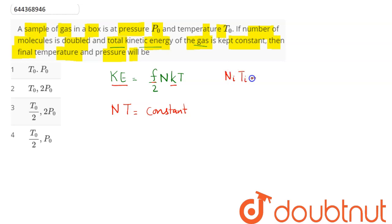N_initial × T_initial = N_final × T_final. If initial number of molecules is N₀, initial temperature is T₀, and final molecules is